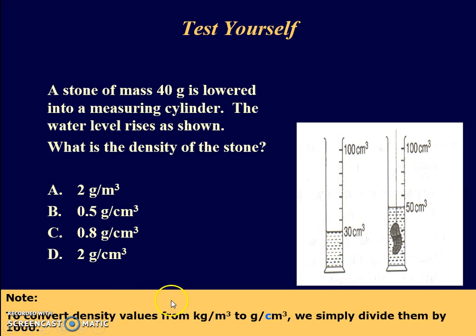To convert a density value from kilograms per meter cubed to grams per cm cubed, we will have to divide by 1000.